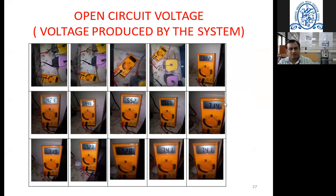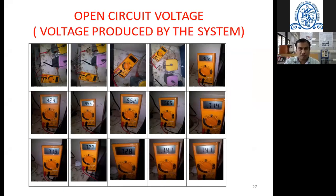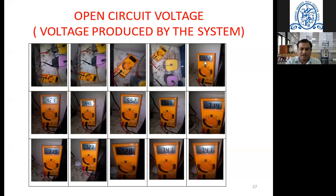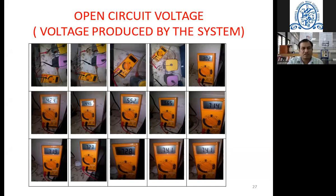I collected thousands of photographs during experimental runs but show only a few. The digital multimeter measurement showing open circuit voltage — without resistance — is shown in these photographs. The values increased progressively: 0.302 V → 0.424 V → 0.446 V → 0.552 V → 0.565 V → 0.714 V → 0.719 V → 0.741 V, clearly showing an increasing open circuit voltage graph.